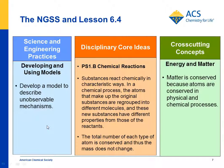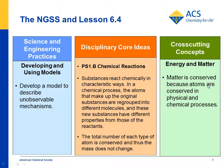If you look at the foundation boxes, students develop a model to describe unobservable mechanisms. In this case, the unobservable mechanism was that substances react faster if they're heated. The idea that substances react chemically in characteristic ways, and that atoms making up the original substance are regrouped into different molecules — students see that — and that the total number of each type of atom is conserved. For cross-cutting concepts, matter is conserved because atoms are conserved in physical and chemical processes, and in this case students saw a chemical process.